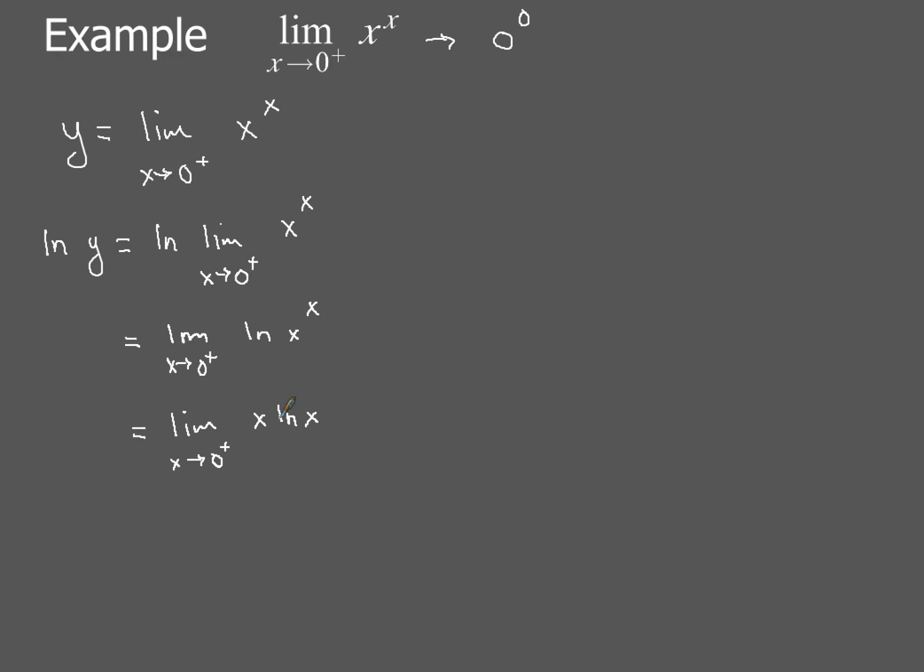So all of this gets us into this form of x times natural log of x. Now, what we're going to do next is take a look at just the natural log of x piece, because we know if we plug 0 into this first x right here, that's going to give us 0 times. But the natural log of x, you have to remember the graph for natural log goes like this. So as you approach 0 from the right-hand side, this piece right here is going to be 0 times negative infinity. So it's not quite the form that we want of 0 over 0, but this is one of our other indeterminate forms.